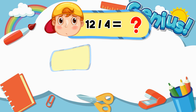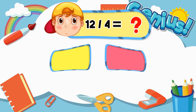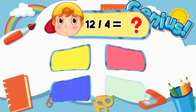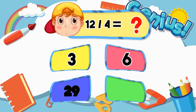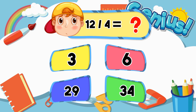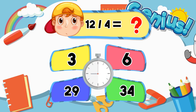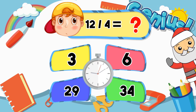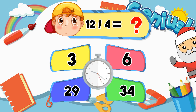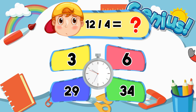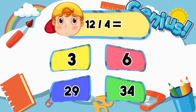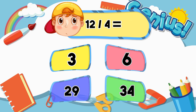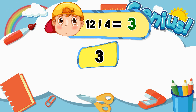What is 12 divided by 4? 3, 6, 29, 34. Answer: 3.